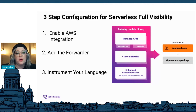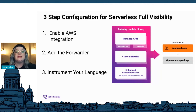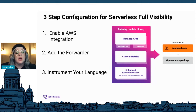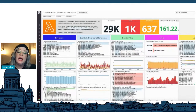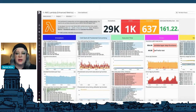Datadog makes it really easy. The first part is enabling our AWS integration. The AWS integration sets up some IAM roles and begins scraping your AWS account for information about what's going on within your AWS infrastructure. Then we add in the forwarder, which ships all the metrics for serverless back to Datadog. And finally, we instrument with our programming language.